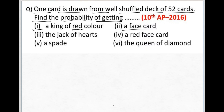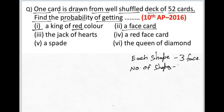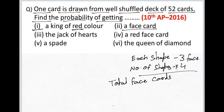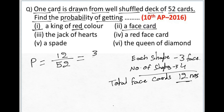Going to the second question: find the probability of getting a face card. Each shape has three face cards and there are 4 shapes. So total number of face cards equals 4 into 3, which is 12. The probability becomes 12 divided by 52, which simplifies to 3 by 13.